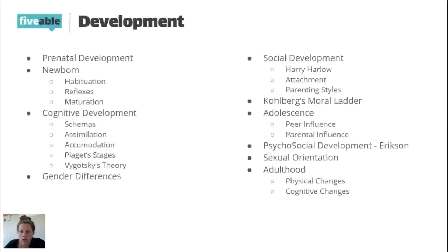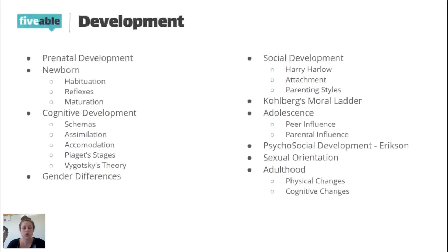Peer influence plays a role at your age particularly in things like how we dress and talk. Parental influence is also important, especially for more permanent things like religious views and political views, which are more influenced by our parents.